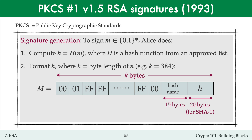Then to its left is a 00 byte, and then a string of ff bytes. Recall that f in hexadecimal is 1111 in binary, so the string of ff bytes is a string of all ones in binary. Finally, you have the 01 byte and the 00 byte. The final padded hash value has byte length k bytes. The reason for the first byte of 00 is to ensure that the integer representation of capital M is less than the modulus n.